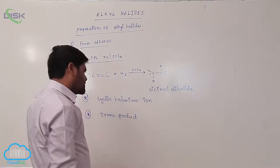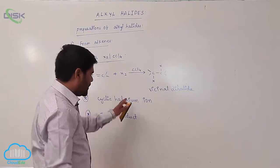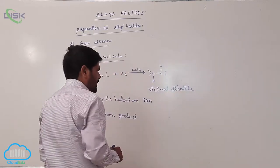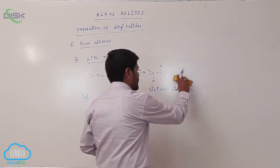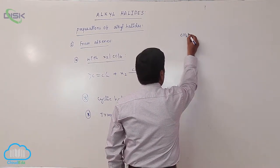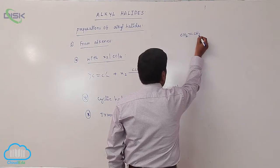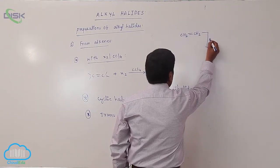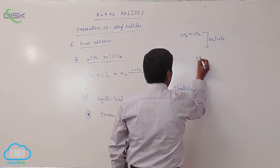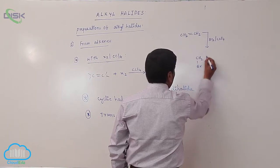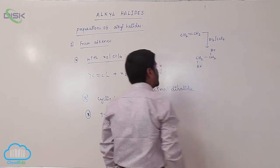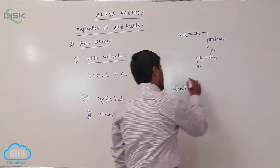The trans product is always formed because the intermediate is a cyclic halonium ion. For example, ethylene reacting with bromine in the presence of carbon tetrachloride gives ethylene bromide — a vicinal dihalo compound.